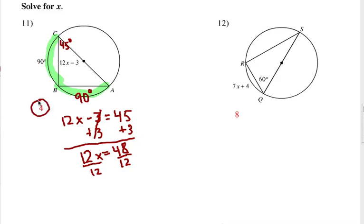So not too bad. Now, at number 12, notice that this is a 60 degree angle here. That is an inscribed angle right there for this arc, for arc RS. So we know that if this is 60 degrees, that arc must be how much? Double that, 120.